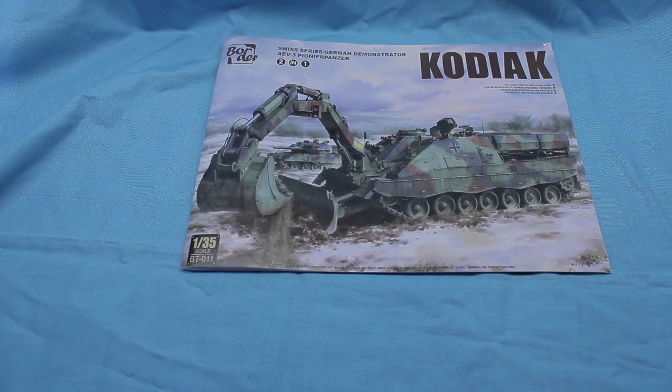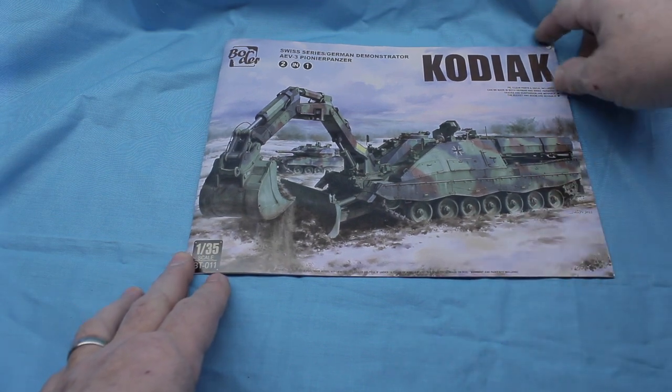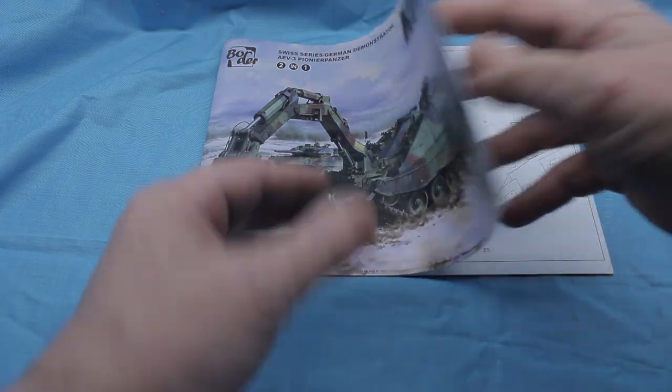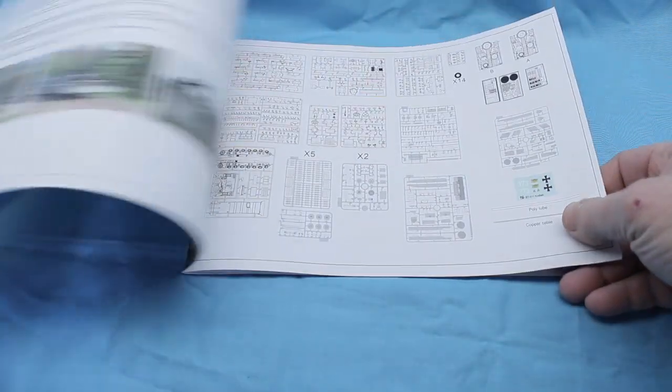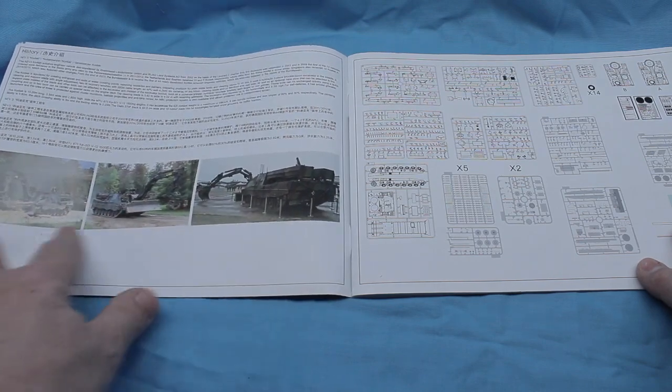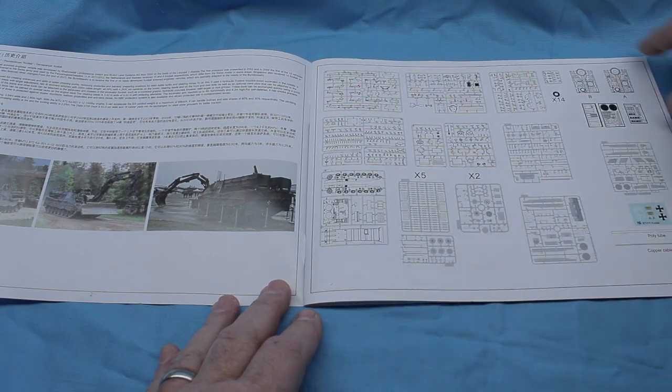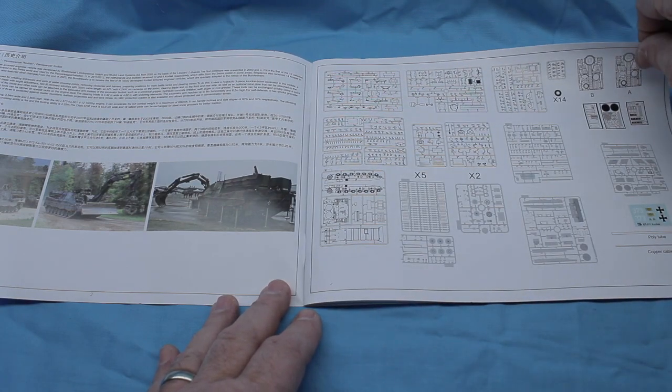So, looking at the instructions, you've got your box art on the front of this, a really nice color picture. And then you go into the actual instruction process. They have a brief history of the vehicle here, some different pictures of different aspects of it. And then they have the layout of all the different spruce sheets. It has quite a few to the kit itself.